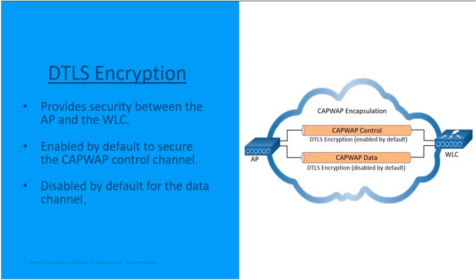DTLS is enabled by default to secure the control channel for CAPWAP. However, this is disabled by default for the data channel. What that means is all CAPWAP management and control traffic exchanged between the access point and the wireless LAN controller is encrypted and secured by default. However, data from the clients moving between an access point and the wireless LAN controller is not encrypted by default.